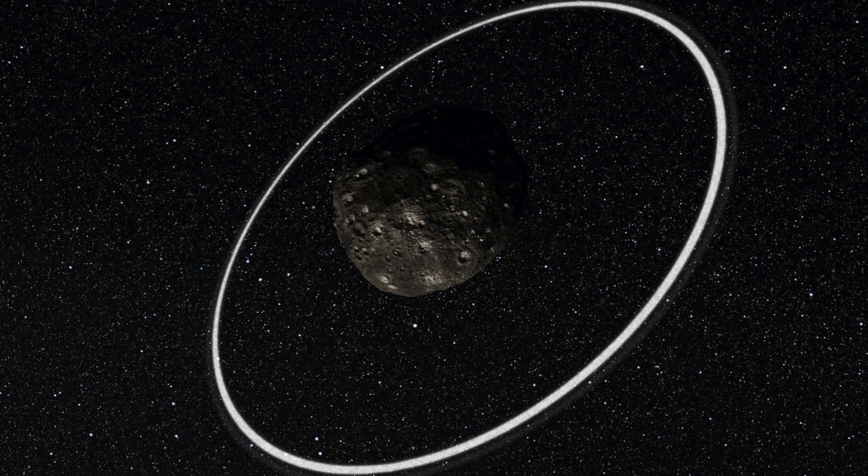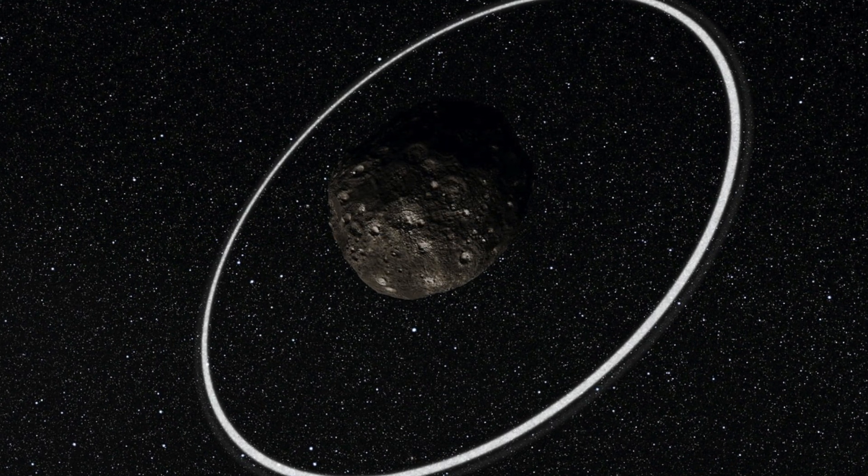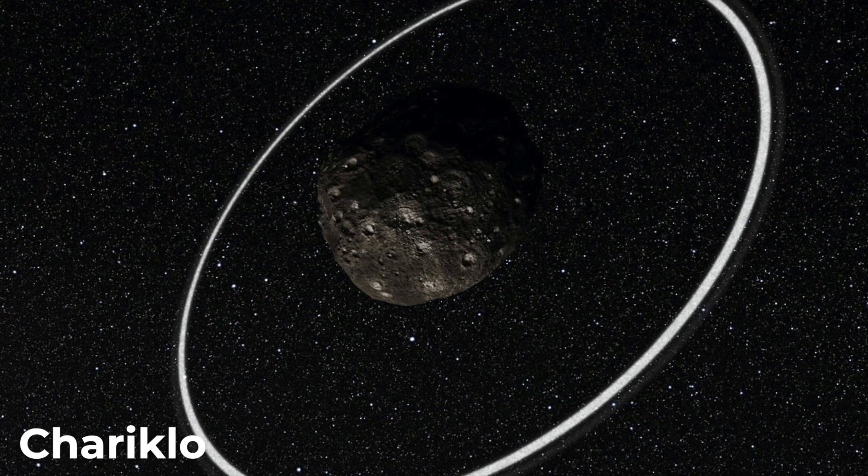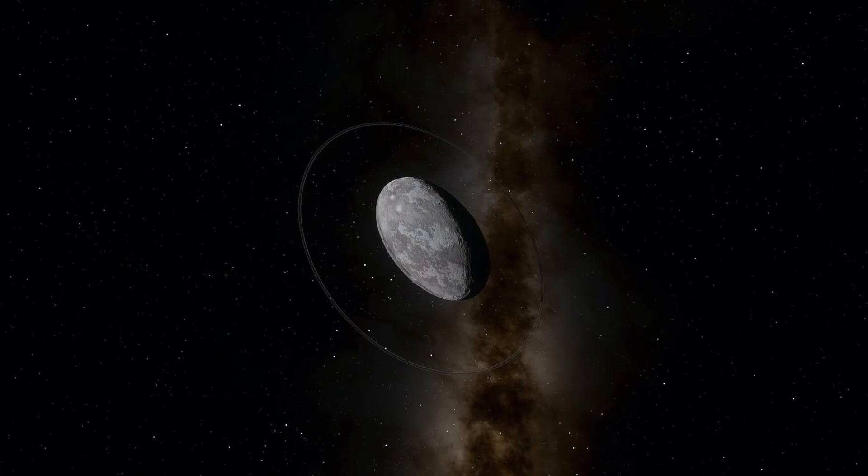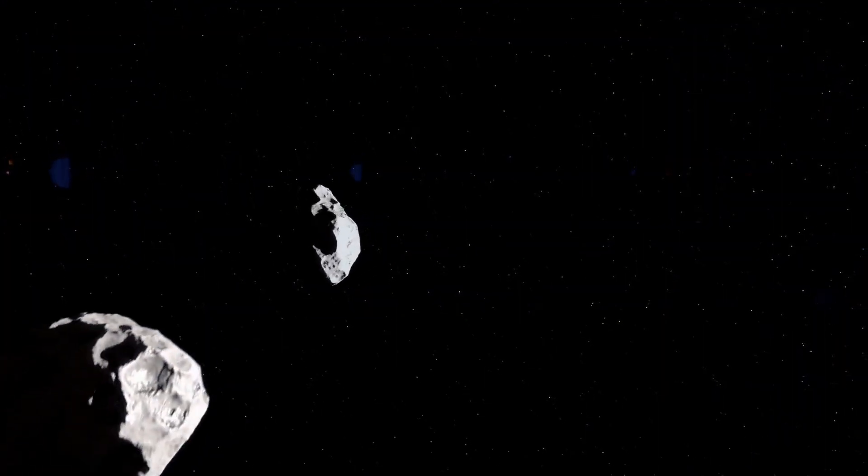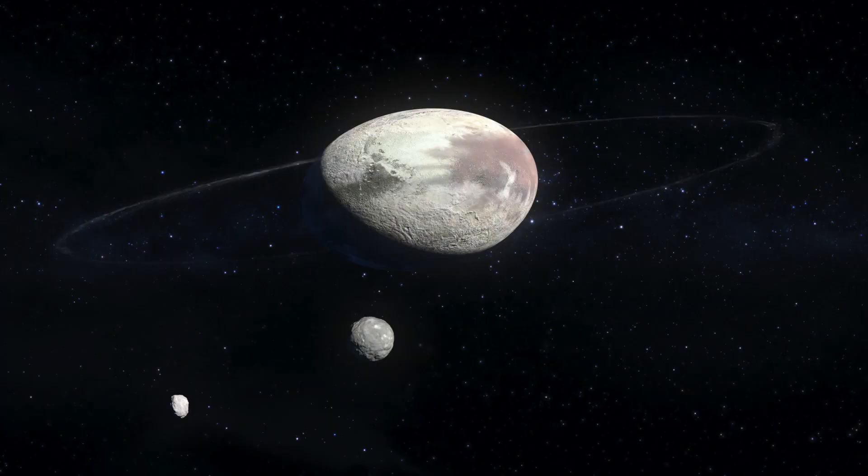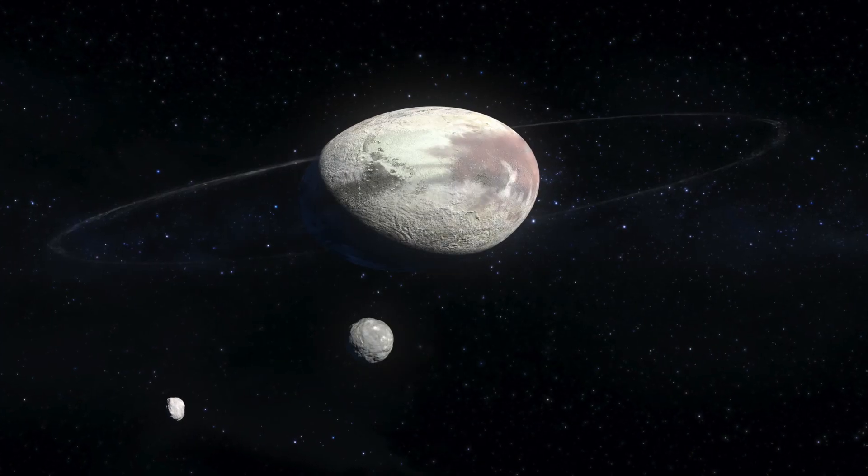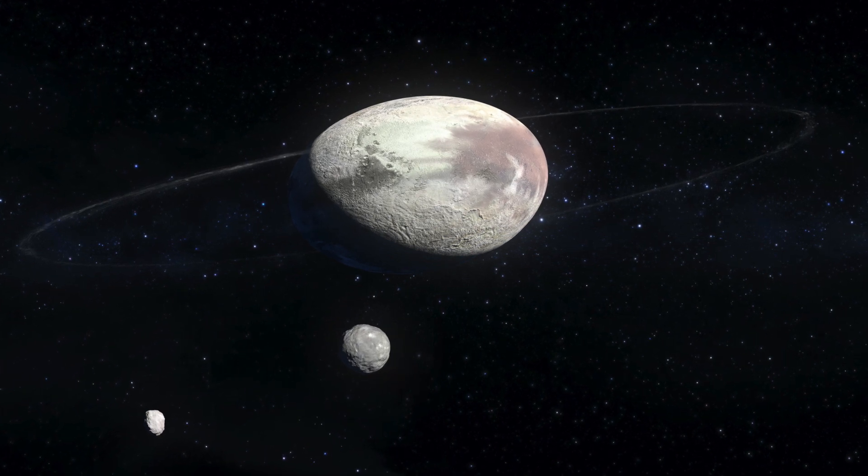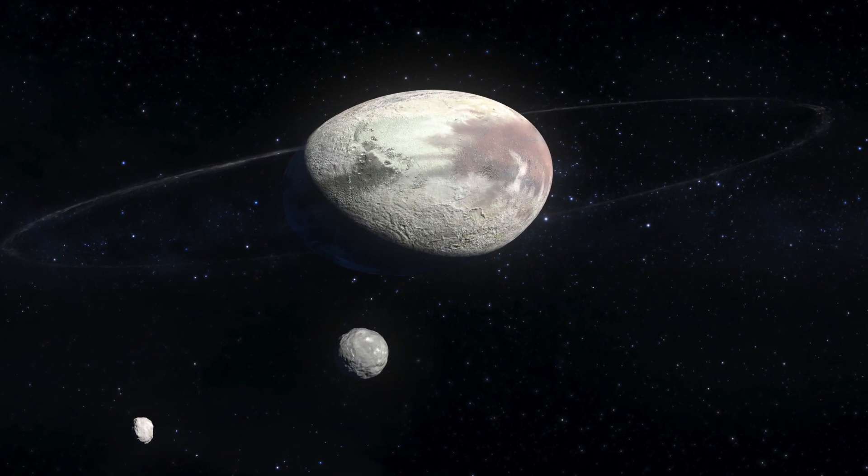In general, there are other objects with their own rings, such as the asteroid Chariklo, which is still a good deal smaller than Haumea. It is the combination of all known properties that suggest that Haumea may once have been much larger and collided with another object. This could also be the origin of the moons and rings that dominate the image of the dwarf planet in research today. Further investigations will be necessary in any case.